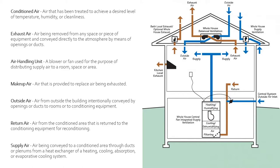Next is supply air. That is air being conveyed to a conditioned area through a duct or plenum from a heat exchanger or heating, cooling, absorption, or evaporative cooling system. That's basically all of your air that's being dumped out of your ducts into your house that's already been conditioned.